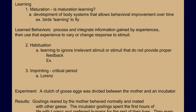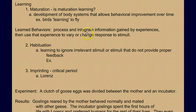Now let's move on to learning. First, we need to be careful about maturation — sometimes what looks like learning is just physical maturation. As neural and muscular development changes, it might look like a bird learns to fly when in fact it's just maturation of its muscle and nervous system. But animals do learn — they process and integrate information gained through experience, and use those experiences to vary or change their behavior in response to stimuli in the future.